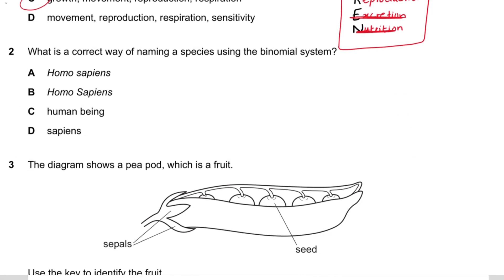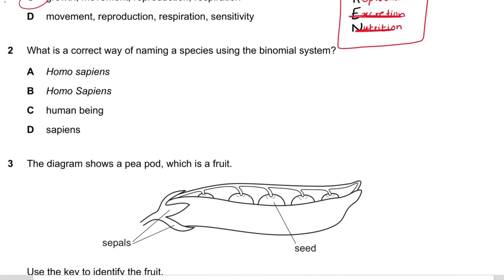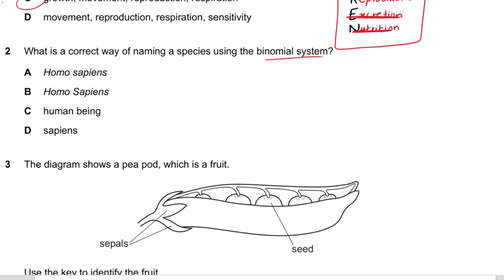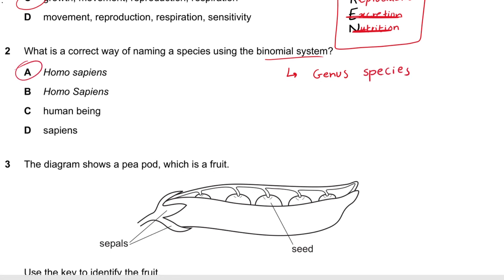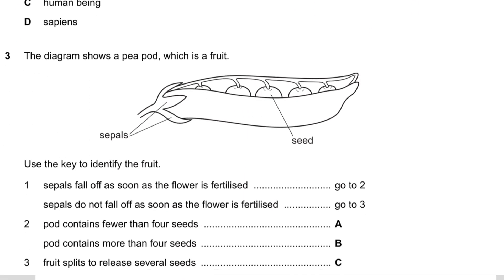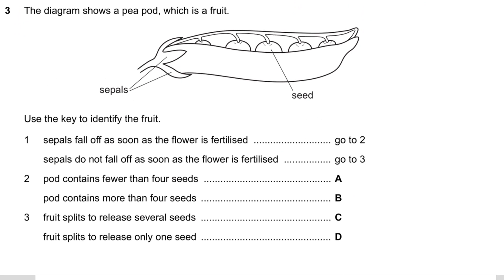Question 2: What is the correct way of naming a species using the binomial system? The binomial system requires a genus name with a capital first letter, then a species name with a small first letter. The answer is A.